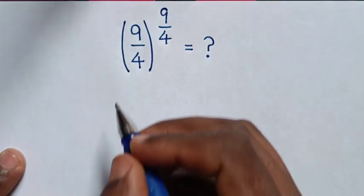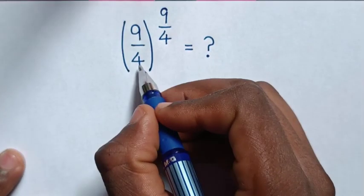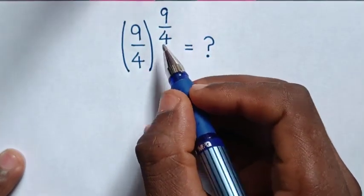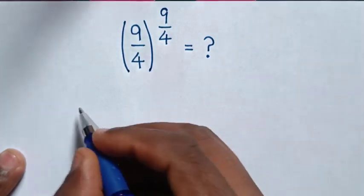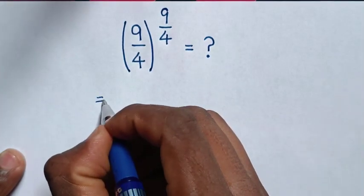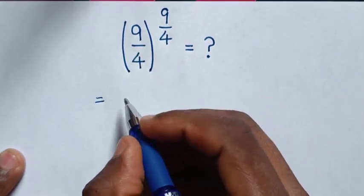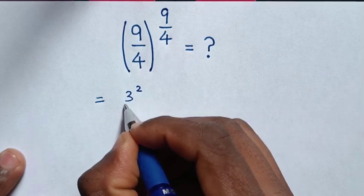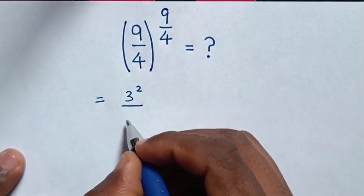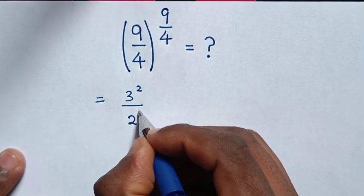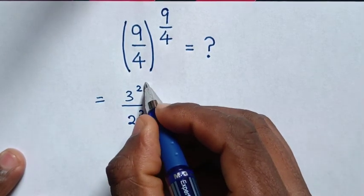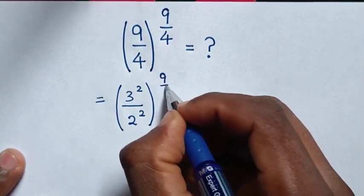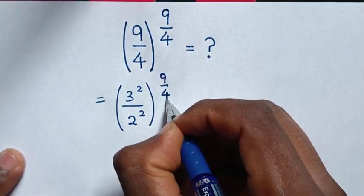Hello! How to solve 9 over 4, power of 9 over 4? It will be equal to: from 9 over 4, 9 is same as 3 squared, over 4 is same as 2 squared, then in bracket, power of 9 over 4.